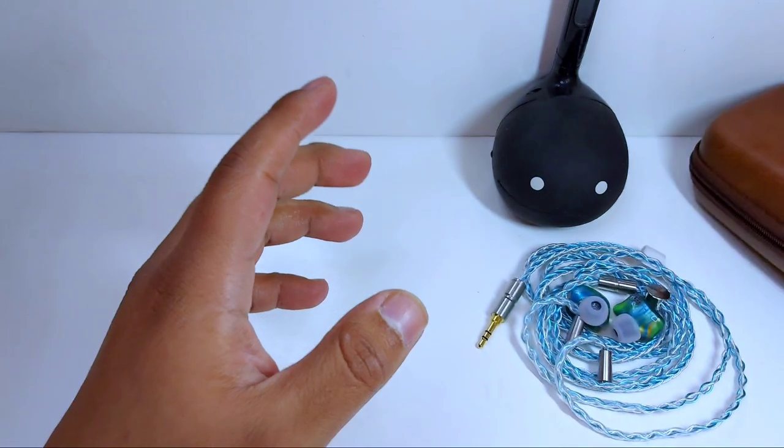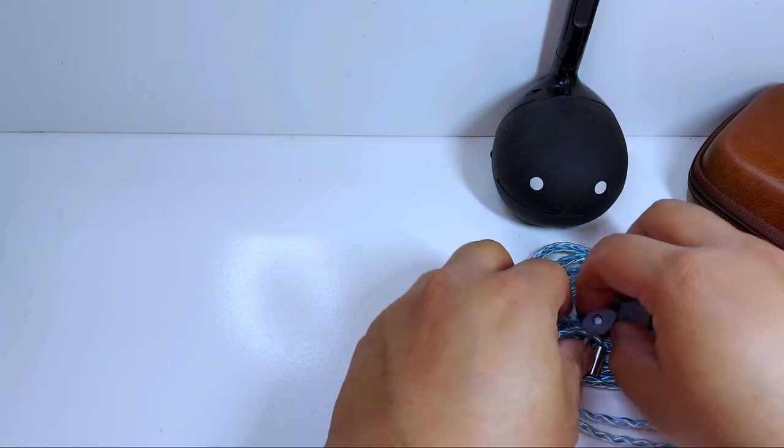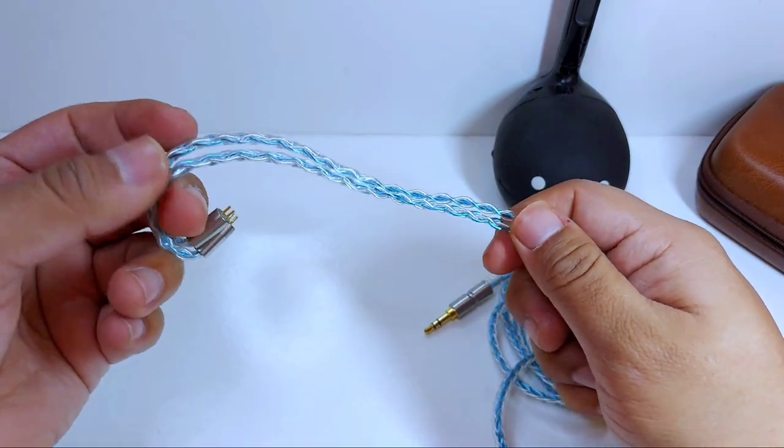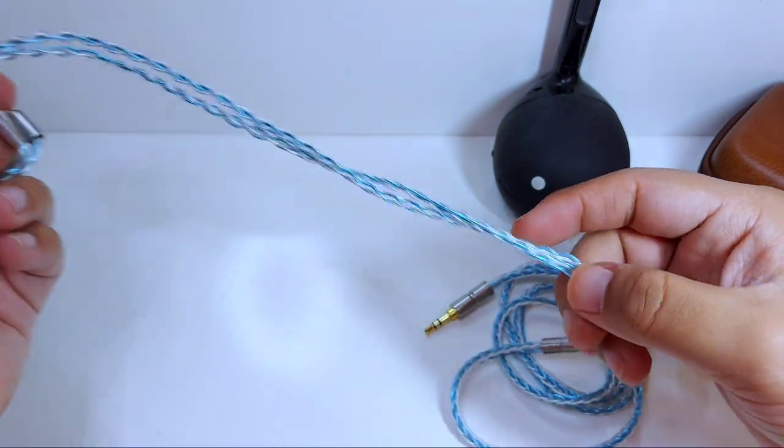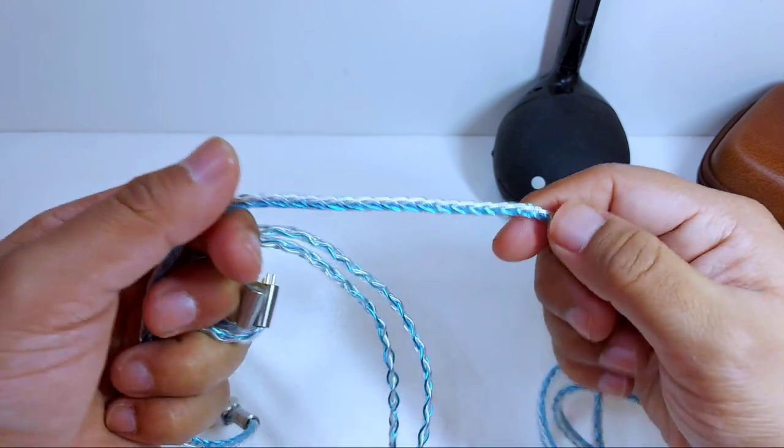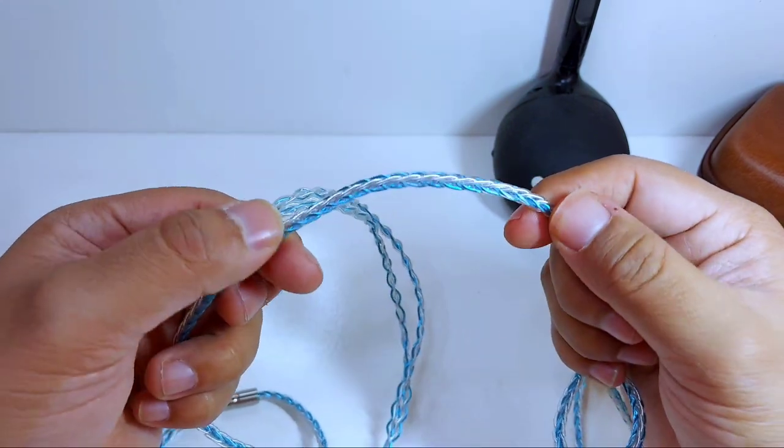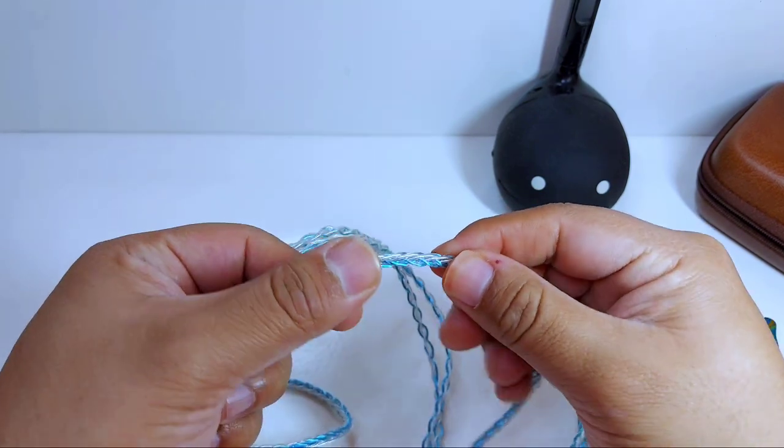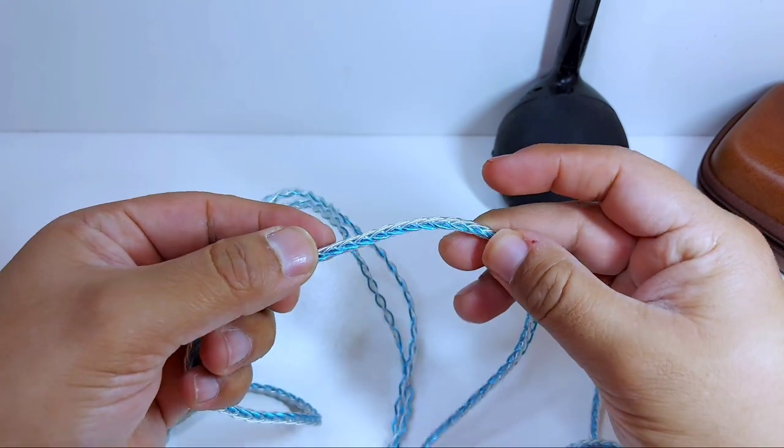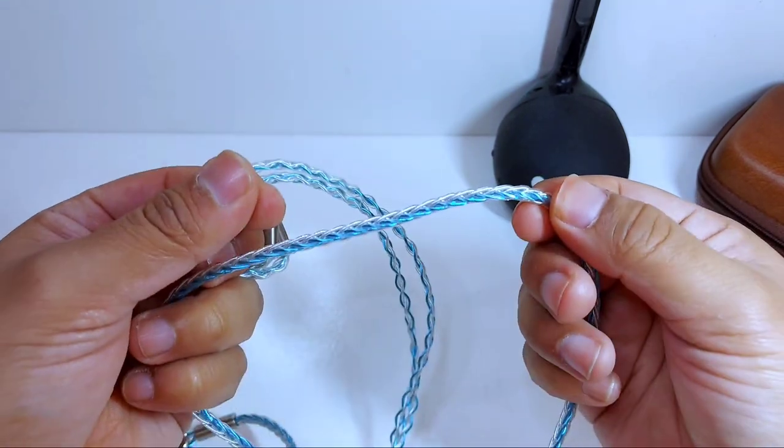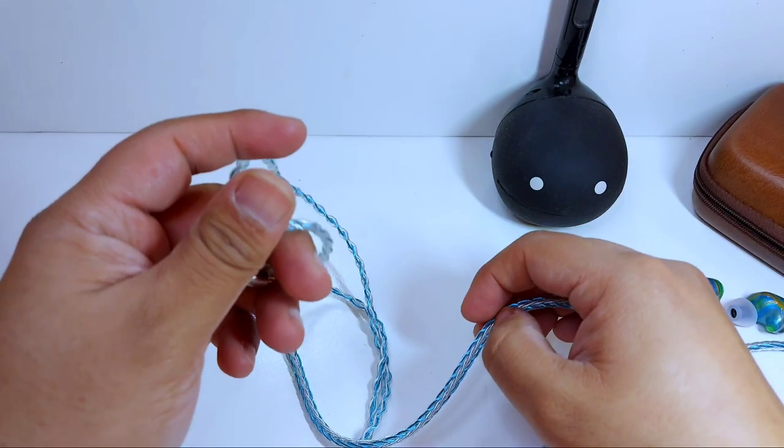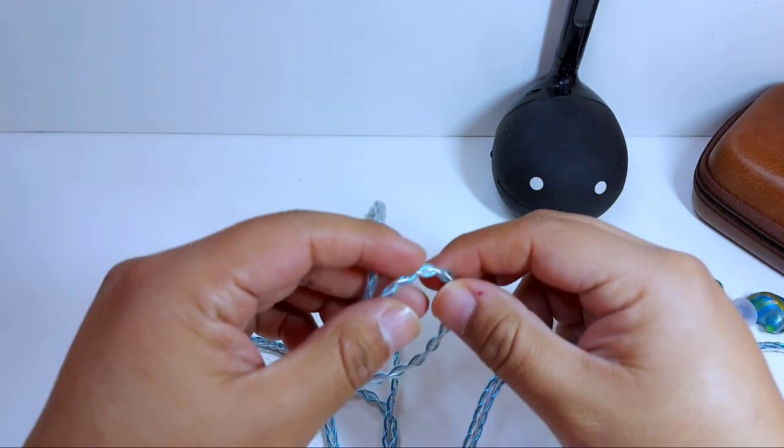Dentro de este case, además de la herramienta que observamos, viene el propio cable. Este puede ser de dos tonalidades, uno que es cobre con negro, y el otro azul con plata, como lo es este. Es un cable de ocho núcleos, pero que se siente muy bien trabajado. Incluso me recuerda mucho el cable que tiene los FIO FH7 por su rigidez y por su tacto. Sinceramente, ese cable me gustó mucho.